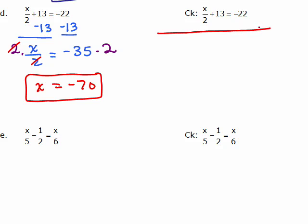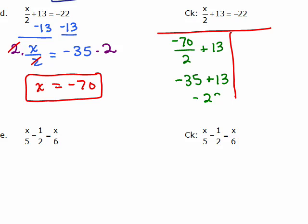Let's check it — we have to put negative 70 in for x, so that's negative 70 over 2 plus 13. Doing order of operations, negative 70 divided by 2 is negative 35 plus 13, and negative 35 plus 13 is negative 22. On the left side, there's nothing to plug in for x, so you just bring down the number. We have the same number on both sides, so we do know that this is the correct solution.